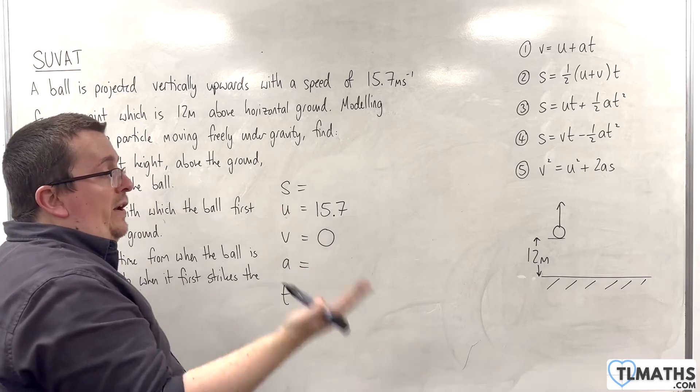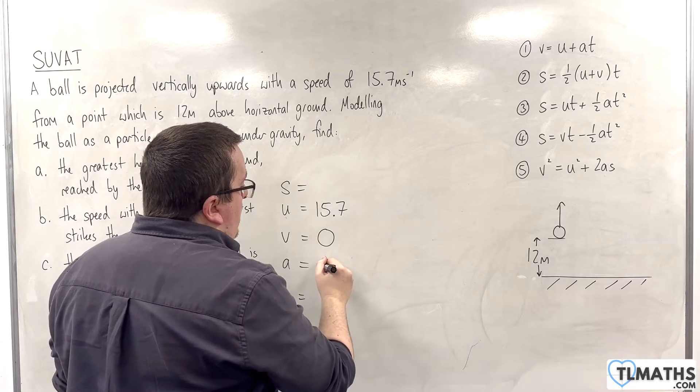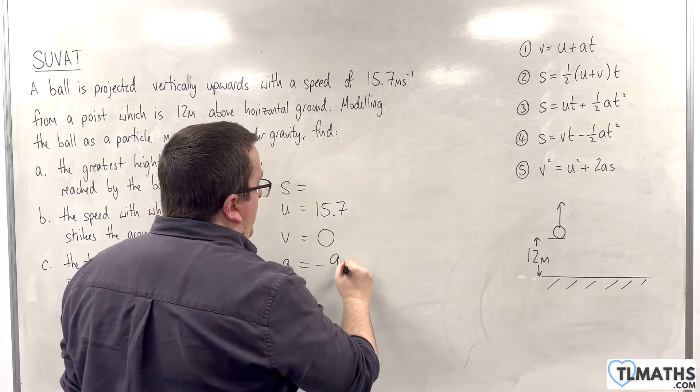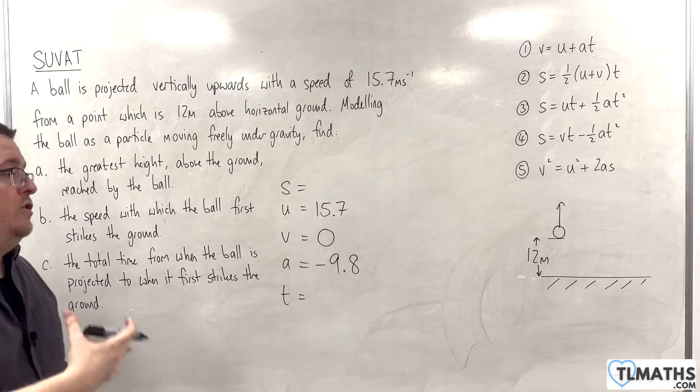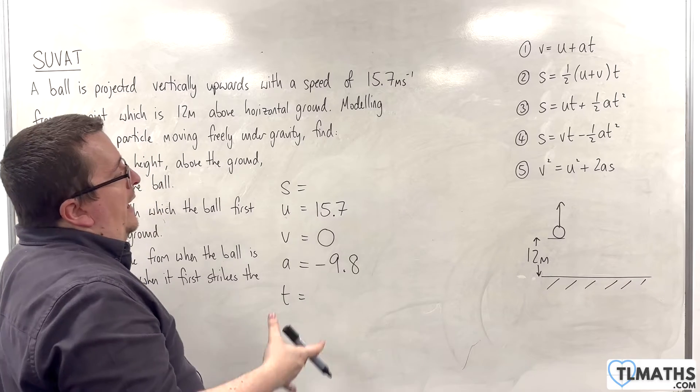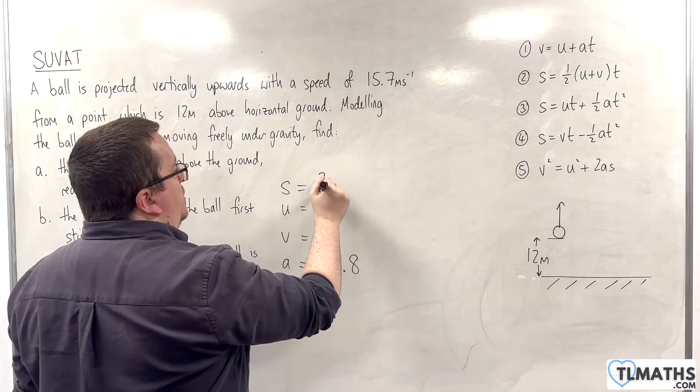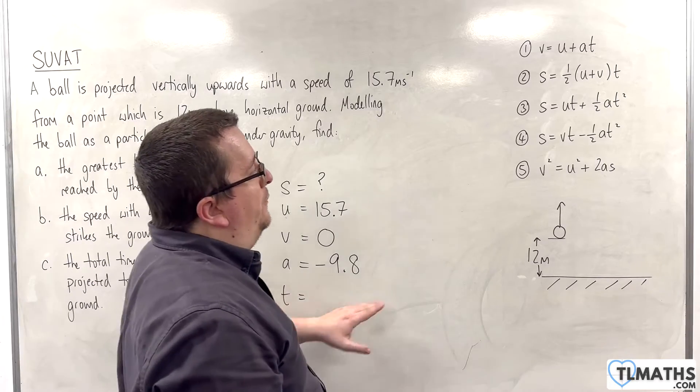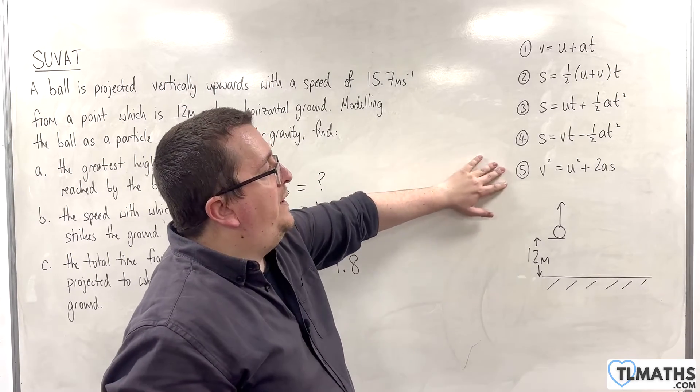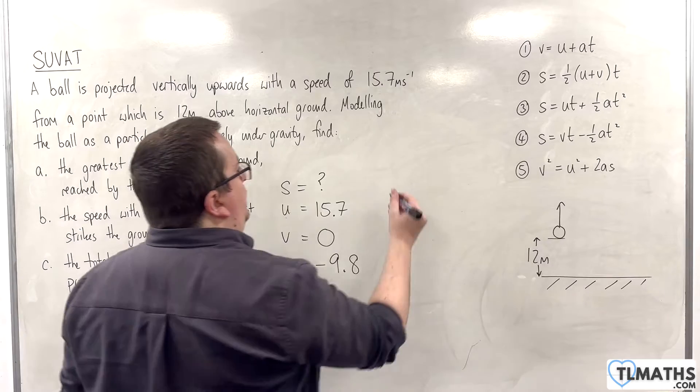So, the acceleration, when it's slowing down, is slowing down by 9.8 metres per second per second. So, the acceleration A is minus 9.8. We want to work out that vertical displacement. So, we want the SUVAT equation that doesn't involve T, which is the last one: V squared equals U squared plus 2AS.